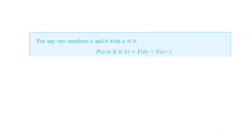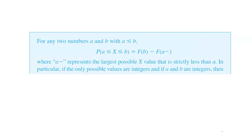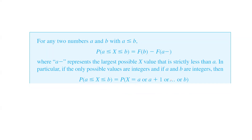For any two numbers a and b where a is less than or equal to b, the probability that X is bounded between a and b is F(b) minus F(a⁻), where a⁻ represents the largest possible X value strictly less than a. In particular, if the only possible values are integers and a and b are integers, then the probability that X is between a and b inclusive is F(b) minus F(a minus 1).